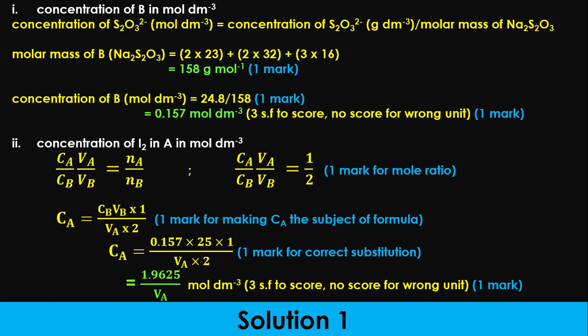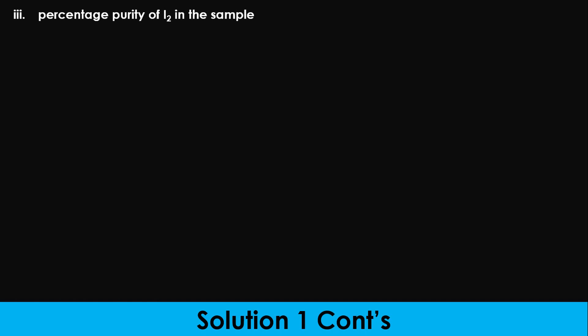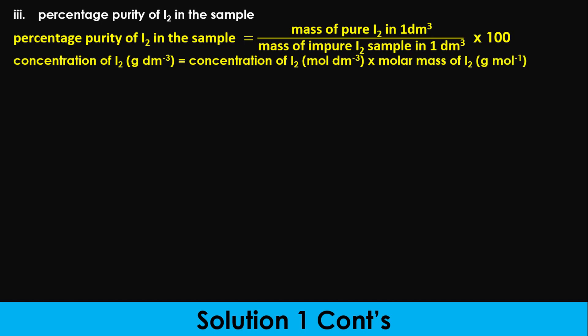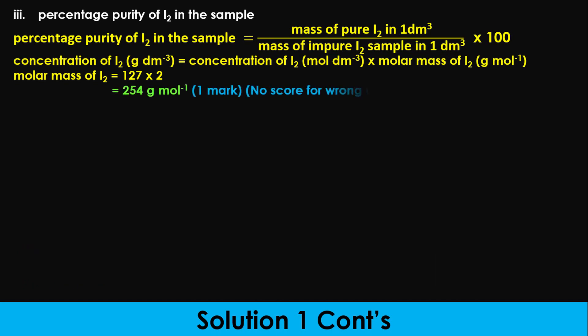If you want to earn an A1 in this paper, do not skip any step. Whenever you are given an impure sample, always expect a question on percentage purity. To calculate the percentage purity of iodine in the sample, use the formula: percentage purity equals mass of pure iodine in 1 dm³ divided by mass of impure iodine sample in 1 dm³, times 100. The molar mass of iodine is calculated as shown on the screen, which equals 254 grams per mole. Always use appropriate units.